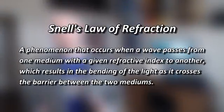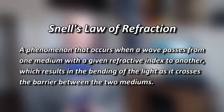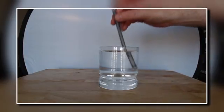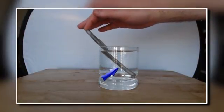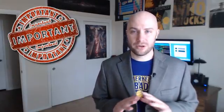In order to understand how mirages are created we need to understand why light refracts. Refraction, as described by Snell's Law, is a phenomenon that occurs when a wave passes from one medium with a given refractive index to another, which results in the bending of the light as it crosses the barrier between the two mediums. The go-to example is often a glass of water with a straw in it that appears bent, and that's usually where the explanation stops. But if we can understand why light bends as it passes through the water, we can apply that to a mirage and suddenly everything makes sense.